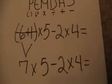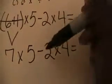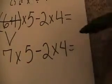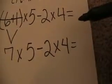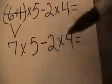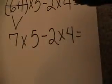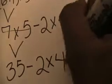Referring to PEMDAS, I look at my operation signs. I have a multiplication sign, a subtract, and a multiplication sign. I have two multiplication signs — so which one do I do first? I do it from left to right, because that is the order in which we work problems. So I work the first multiplication sign first: seven times five equals thirty-five. I scratch that off and bring the rest of the problem down: minus two times four equals.